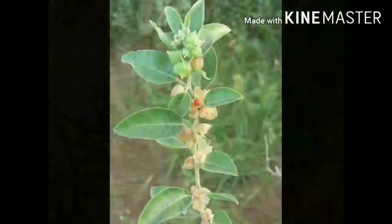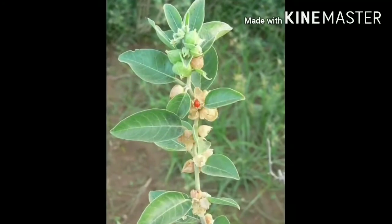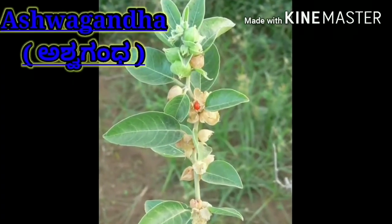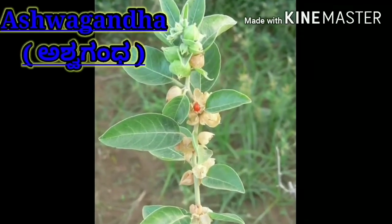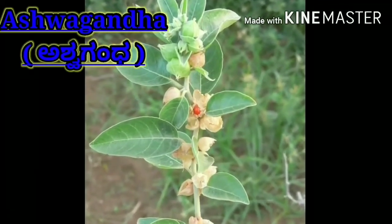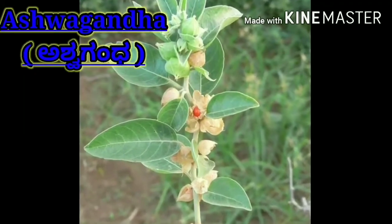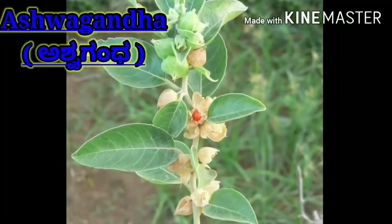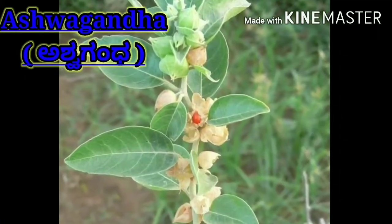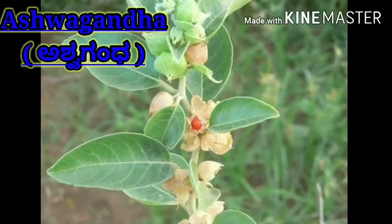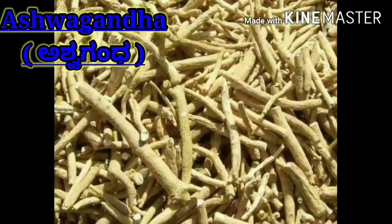Let's take a look at this picture. The first one is Ashwagandha. This is a base mask. It can be used for medicinal purposes. It can be used as a leaf mask. It can be used as turmeric. It will be light color.